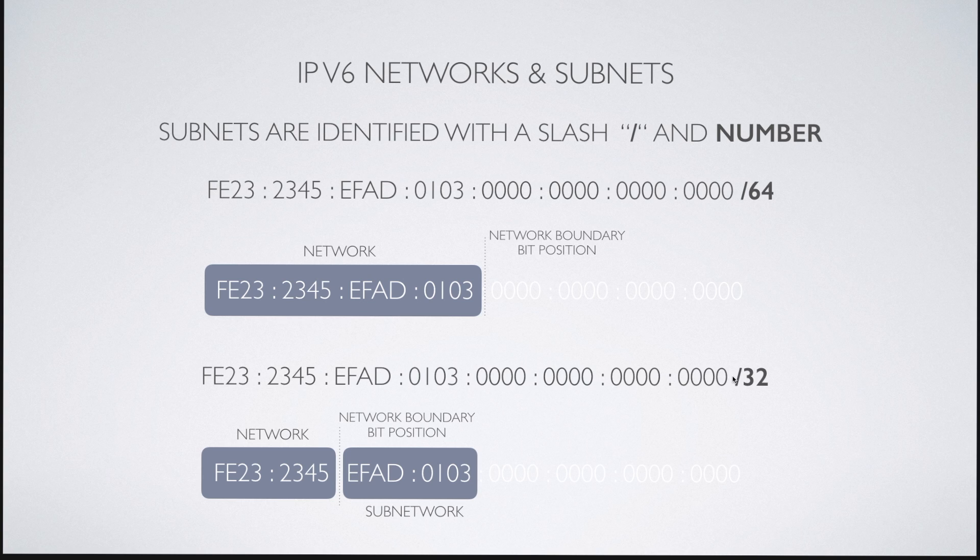Let's look at another example, where we take the same IP address, but then with the slash 32. So now, the network address is only 32 bits wide. FE232345. And the remaining 32 bits is the area for the subnetting. Now, in this case, we have highlighted a subnet EFAD0103. Now, the host area still remains 64 bits wide.